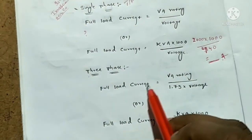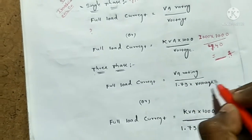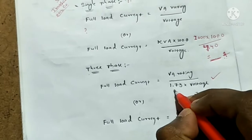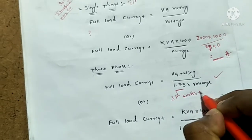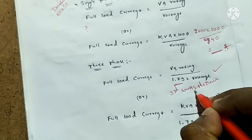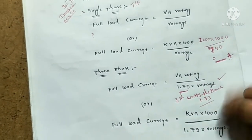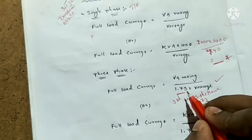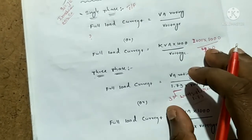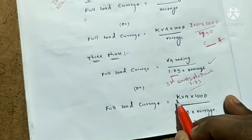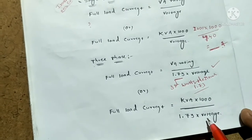For three-phase, the full-load current formula is: VA rating divided by 1.73 into voltage. This formula is very important. The 1.73 is the three-phase constant term from Watt's theorem. If you know Watt's theorem, that gives the 1.73. If you don't know, ask your lecturer — not Google, ask your lecturer — so you get more knowledge. Full-load current equals KVA into 1000 divided by 1.73 into voltage.